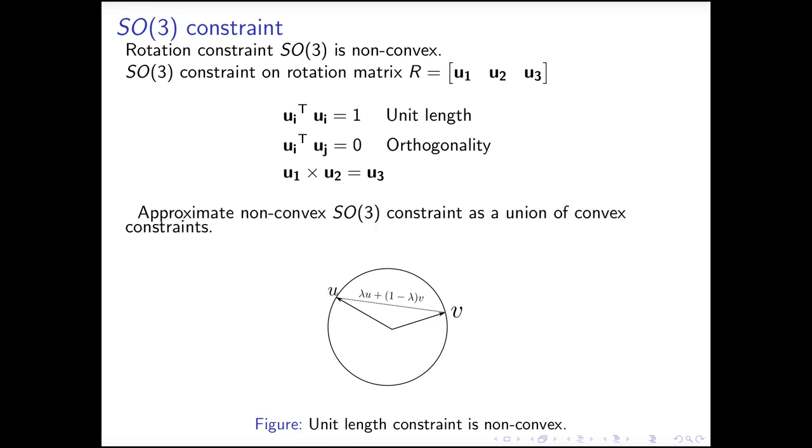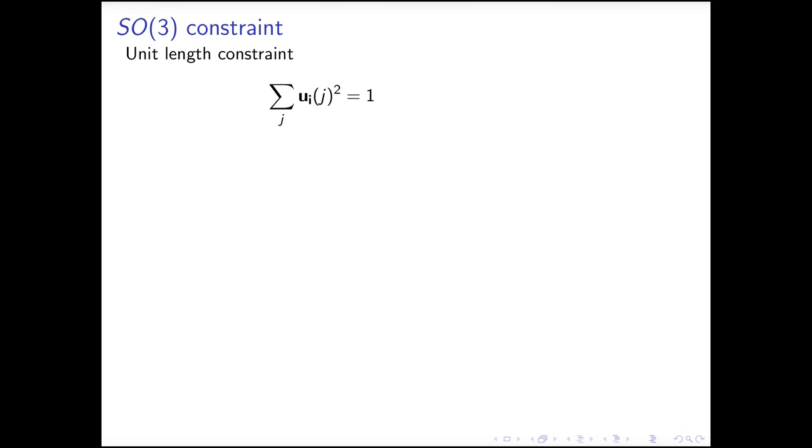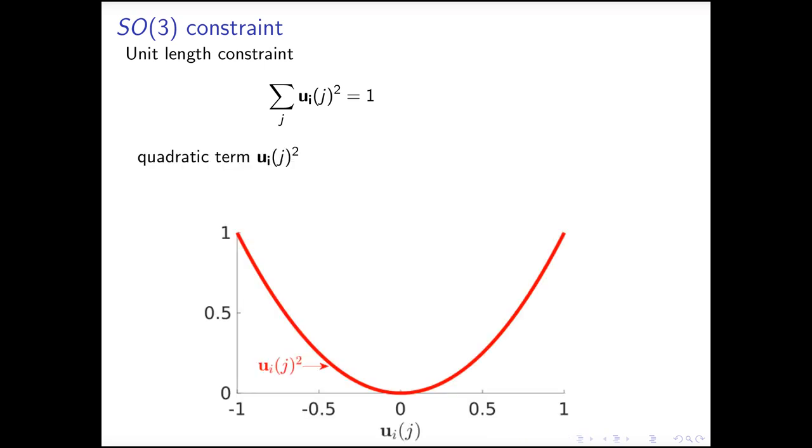We will apply the idea mentioned in the previous slide, to relax the non-convex SO(3) constraints as unions of convex constraints. How shall we do that? Let's first look at the unit length constraint, which can be expressed as the summation of quadratic terms equals to 1. Here, I plot the curve of one quadratic term. Although this curve is non-convex, we can cut it into smaller pieces, and compute the convex hull of each small piece. We then introduce a slack variable w as the approximation of the quadratic term, by requiring that the point w to be within one of the convex hulls. This can be formulated as a mixed integer convex constraint.